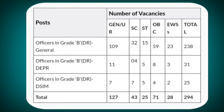For Officers in Grade B DEPR, the vacancies are: UR - 11, SC - 4, ST - 5, OBC - 8, EWS - 3, Total - 31. For Officers in Grade B DSIM, the vacancies are: UR - 7, SC - 7, ST - 5, OBC - 4, EWS - 2, Total - 25.